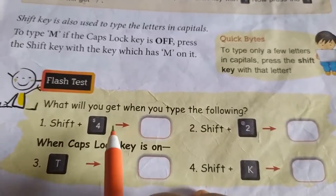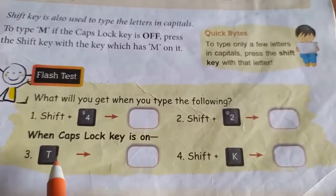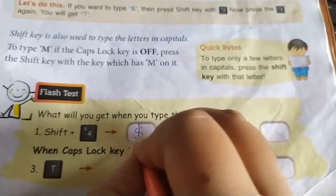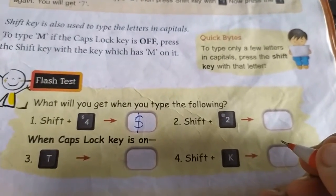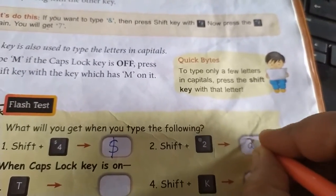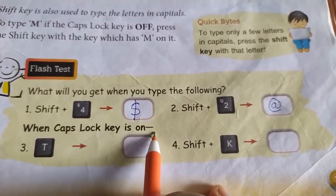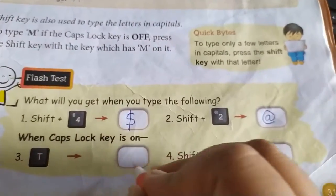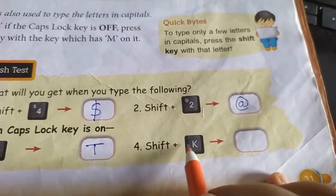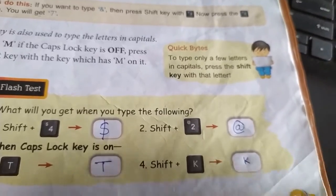Now there is a flash test. What will you get when you type the following? Shift plus 4 — you will get the dollar sign. Shift plus 2 — you will get the at-the-rate sign. When caps lock key is on and you press shift plus K, you will get the small letter k.